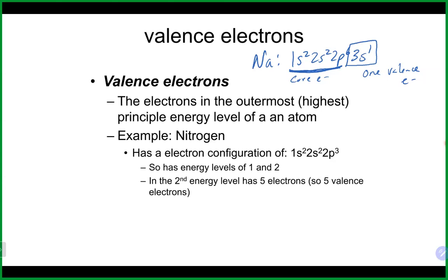Valence electrons, which are the outermost and highest energy electrons, are the ones that are really involved in bonding. For example, this is nitrogen — on the second energy level, which is the highest, it has 2s2 and 2p3, which means nitrogen would have five valence electrons. Those 1s2 electrons would be the core electrons, not involved in bonding.